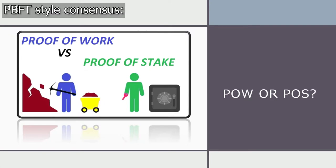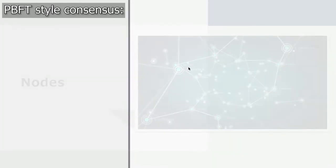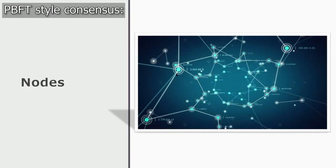So they decided not to go for either of these and instead designed their own consensus from first principles. The Chromia software runs on nodes, which are physical or virtual instances of computing power. Users connect to these nodes to post transactions, query data, or synchronize their private replicas.